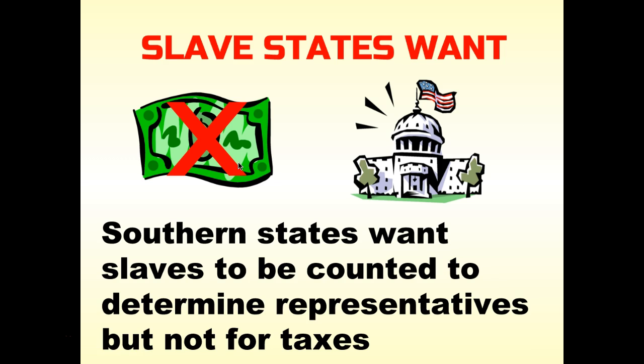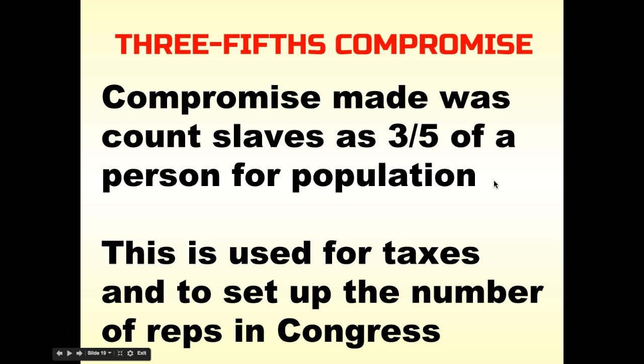What they came up with is called the Three-Fifths Compromise. They decided that representation and taxation would be based on the slave population counting as three-fifths of a person. So when calculating a state's population, only three-fifths of the slave population was counted. They met in the middle — slaves were counted, but not entirely. Of course, the idea of counting someone as three-fifths of a person reveals the cruel nature of slavery and the devaluing of human beings in this system.